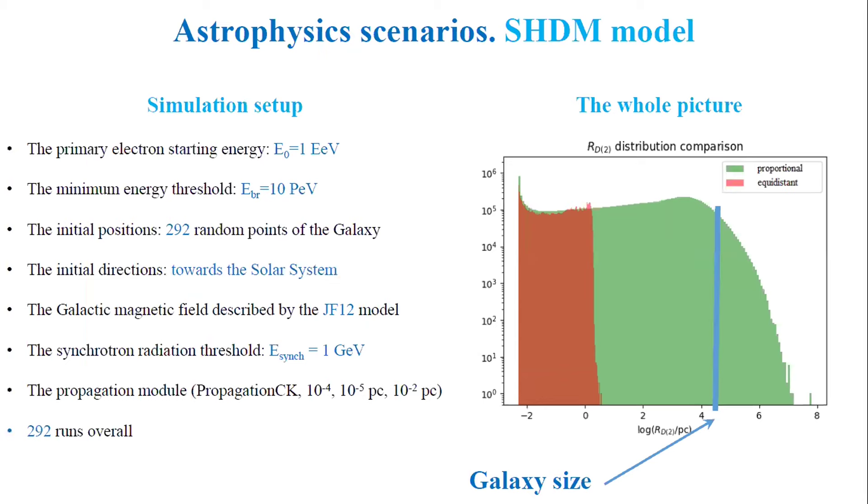The other astrophysics scenario corresponds to the uniform distribution of primary electrons over the galaxy. We refer to it, coining the name SHDM, Super Heavy Dark Matter Model. The reasoning is that within this exotic model, sources of heavy particles, which could be sources of ultra-high energy photons, are everywhere. The photons immediately produce an electron-positron pair.